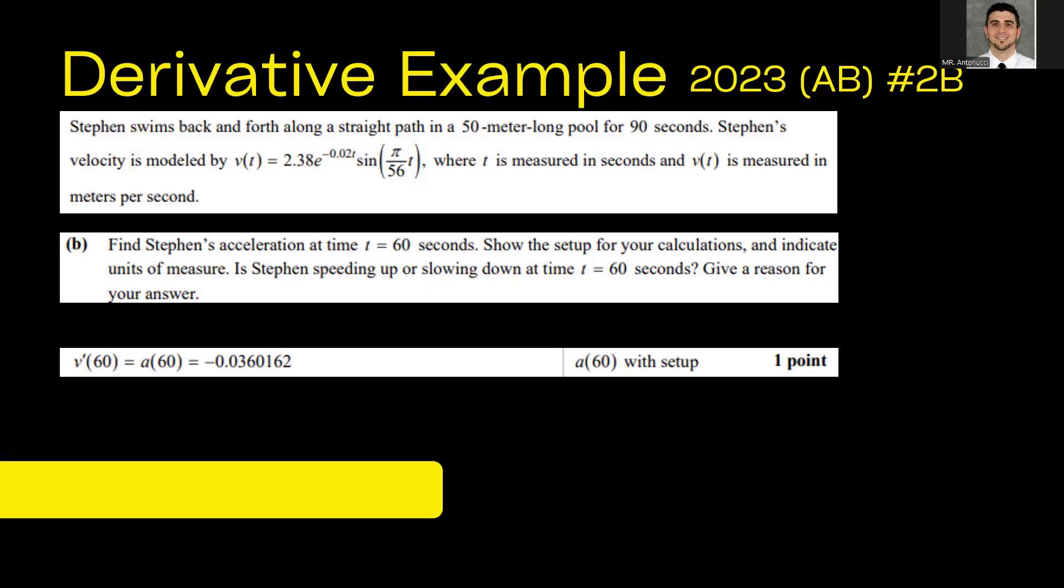So here we have 2023's AB exam question number 2B talks about swimming, Stephen swimming back and forth. It gives you his velocity function. Question B asks you to figure out the acceleration at t = 60 seconds. The acceleration is the derivative of velocity. This is on a calculator or Desmos allowed portion of the exam. So we can use Desmos to quickly figure this out. Now, notice in the solutions here, all they have is the notation for the derivative that it equals the acceleration at 60 and then the actual value of it. It's very easy to do it in Desmos, and I'm going to show you how.